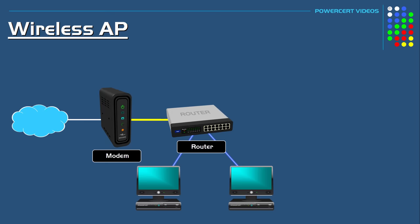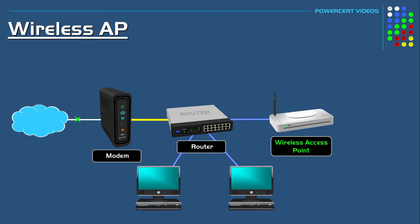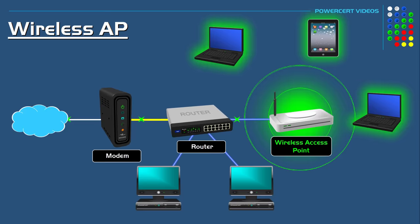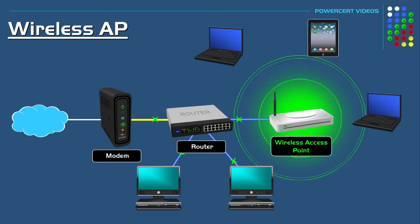So now let's talk about a wireless access point. A wireless AP relays data between a wired network and wireless devices. It's basically a wireless hub that's used by wireless devices to connect to an existing wired network. A wireless AP connects directly to an organization's router, where the router is then connected directly to a modem, which gives the wireless devices access to the internet.